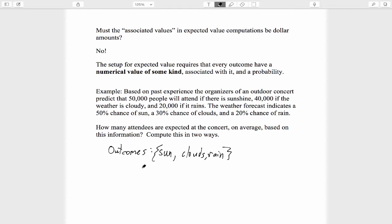What are the associated values? Well, the associated values are 50,000 people, 40,000 people, or 20,000 people. I'm writing K for thousand. To each outcome, there is associated a certain numerical value. It's also true that we know the probability for each outcome: 0.5 for sun, 0.3 for clouds, and 0.2 for rain.